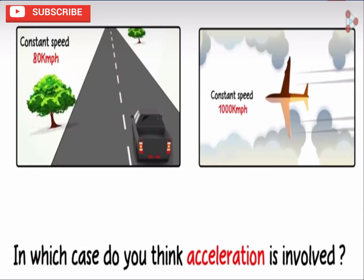Let's look at a few examples. In which case do you think acceleration is involved — image A or image B? The answer is none of the two has an acceleration, because they are moving at a constant speed with no change in their direction. There is no change in their velocity, therefore there is no acceleration between the two vehicles.